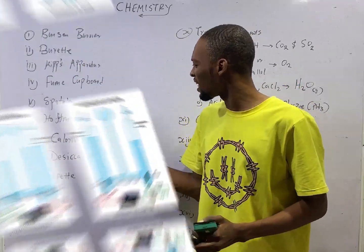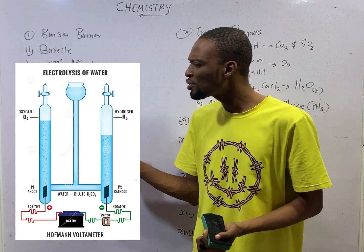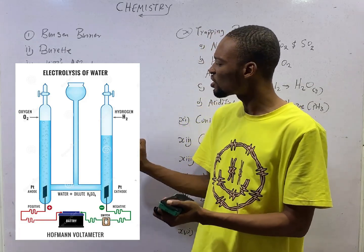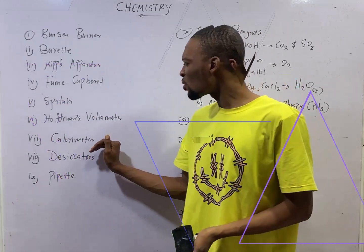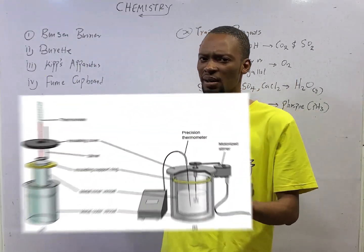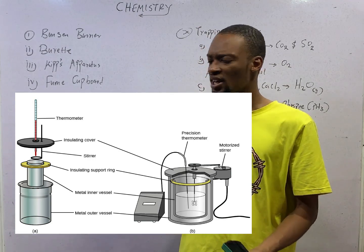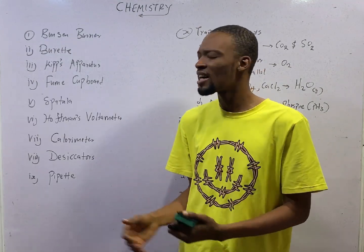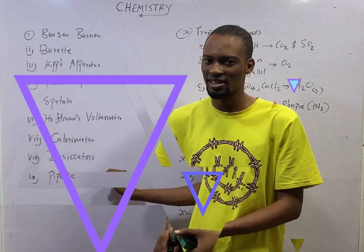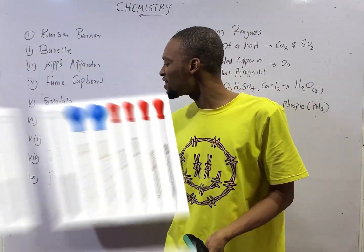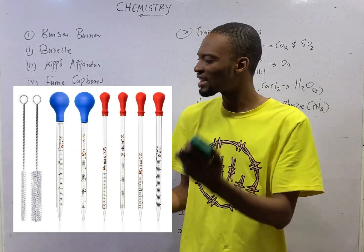Hoffmann's voltameter is used in electrolysis of water to produce hydrogen gas (H₂) and oxygen gas (O₂). Calorimeters are used for measuring enthalpy change, that is the heat change of chemical reactions. While desiccators are used for drying various substances.